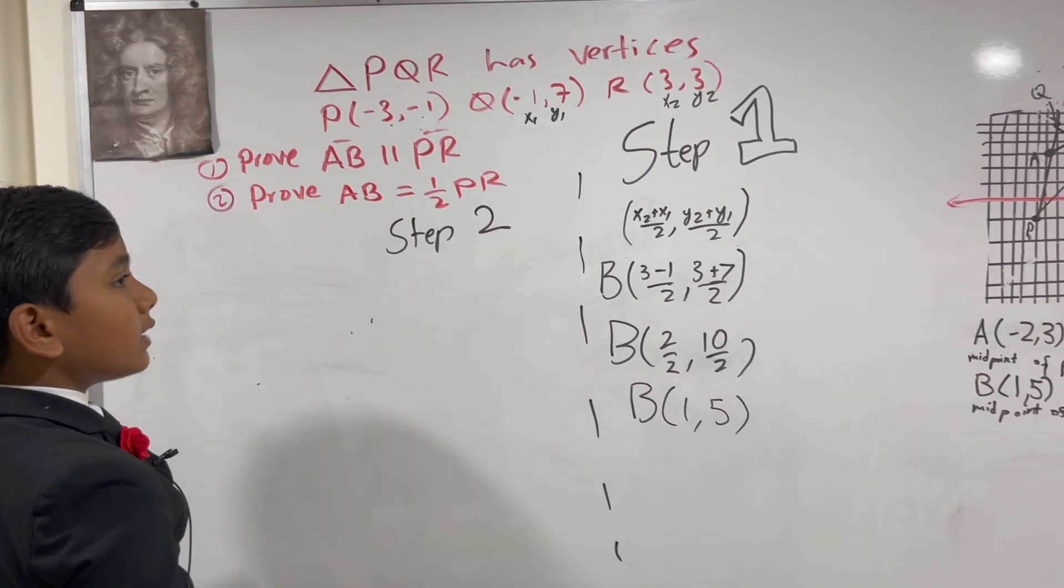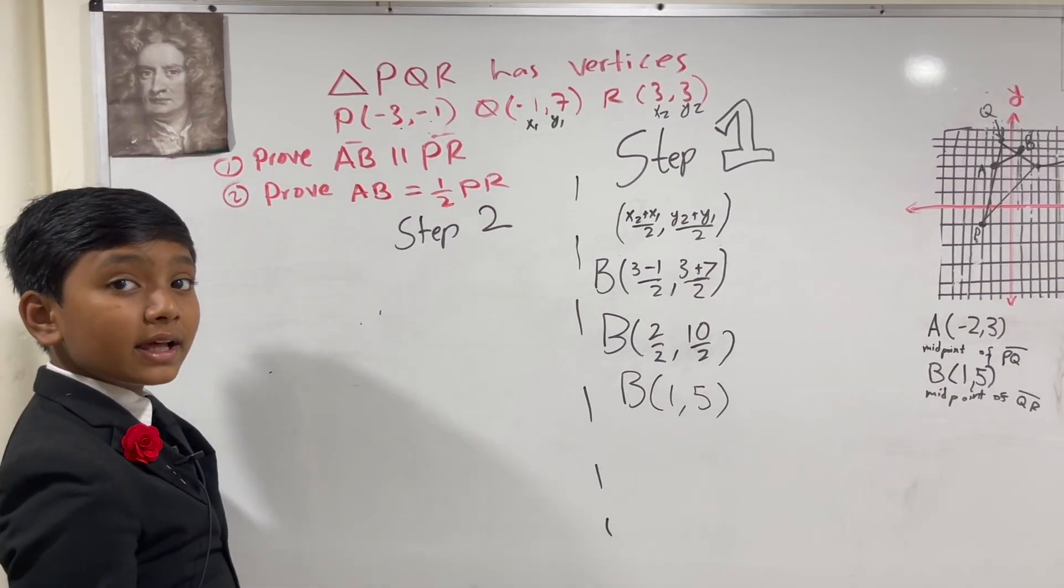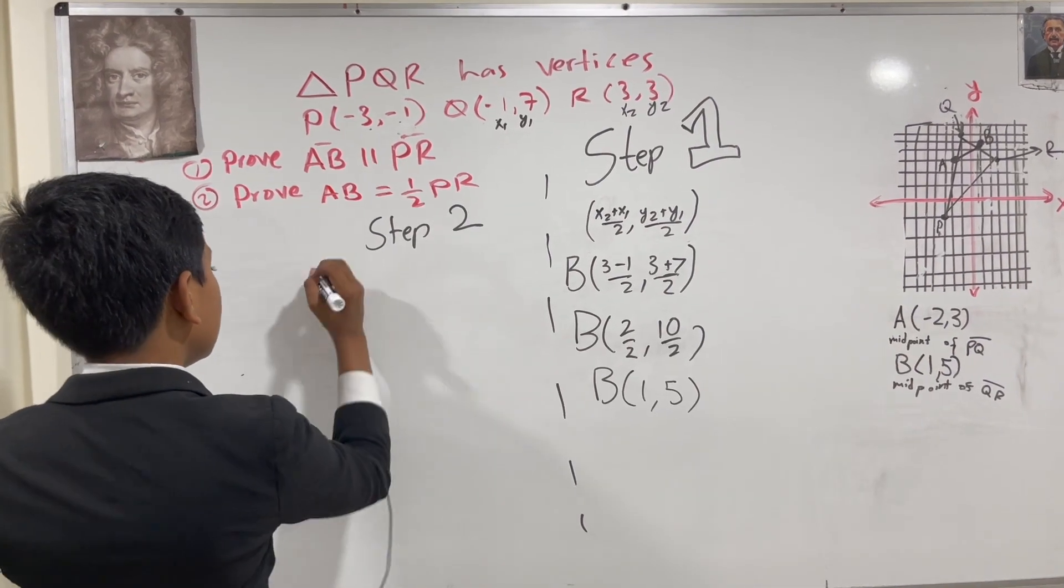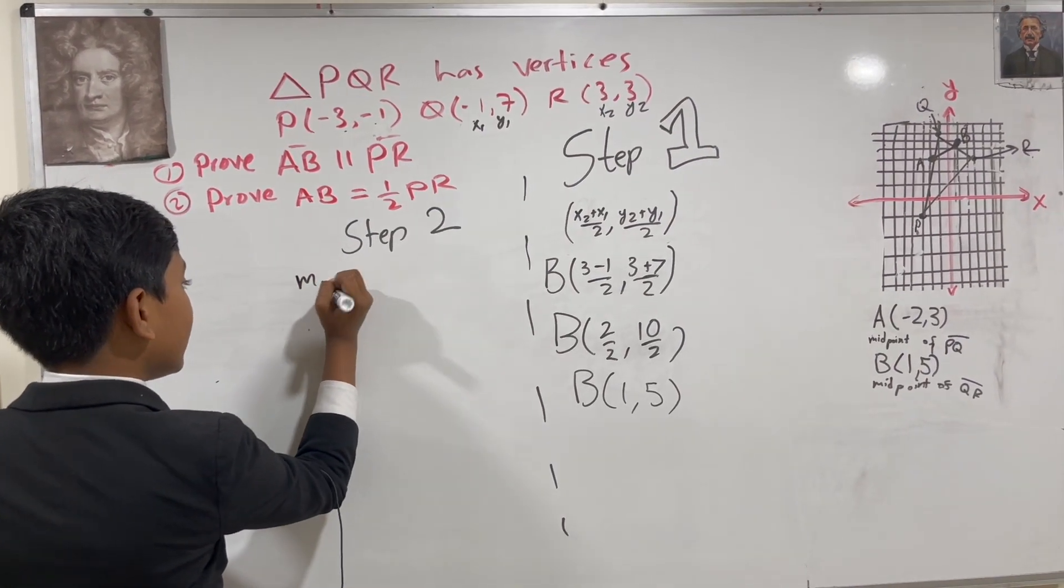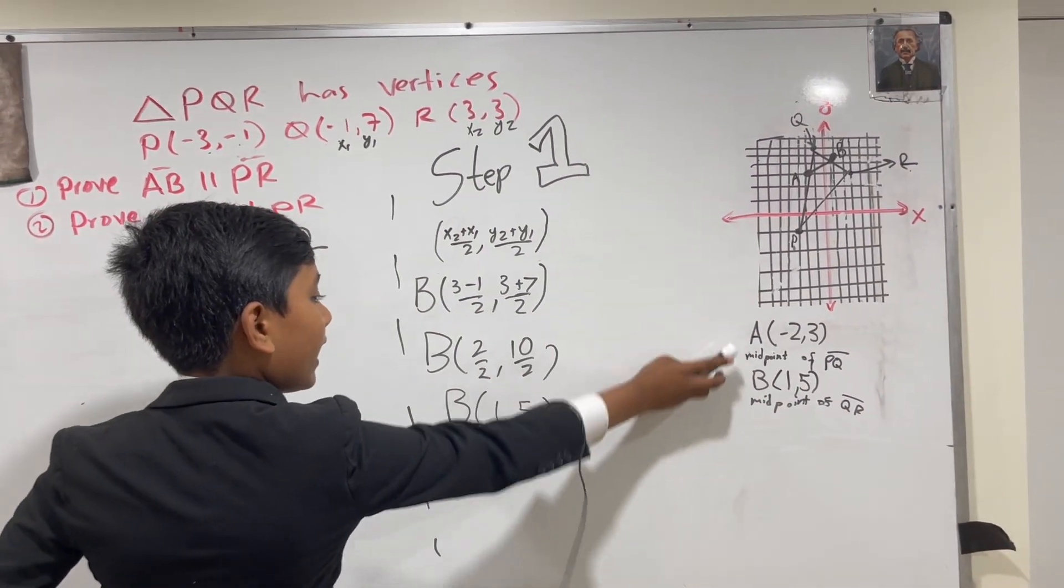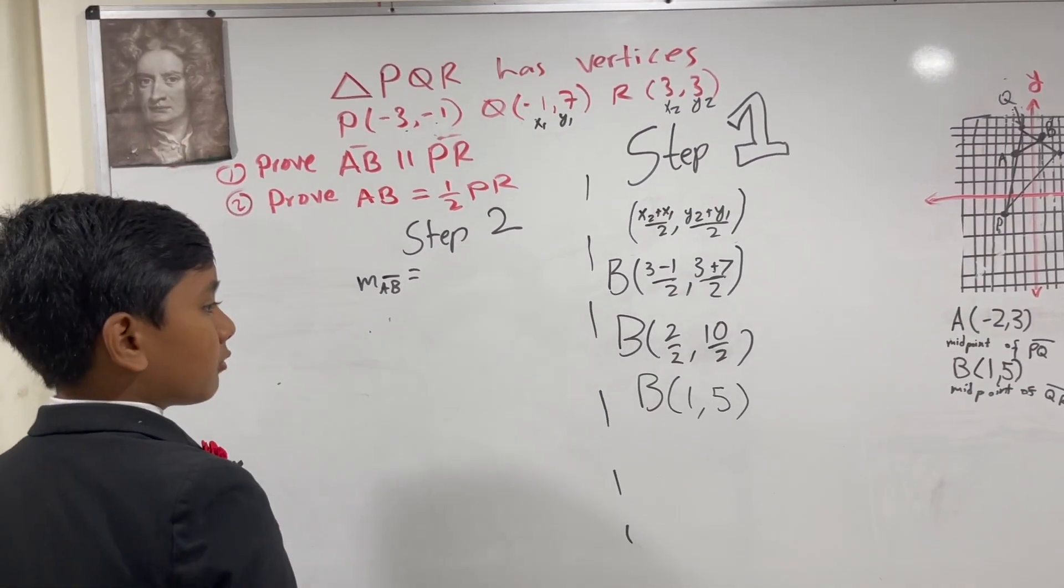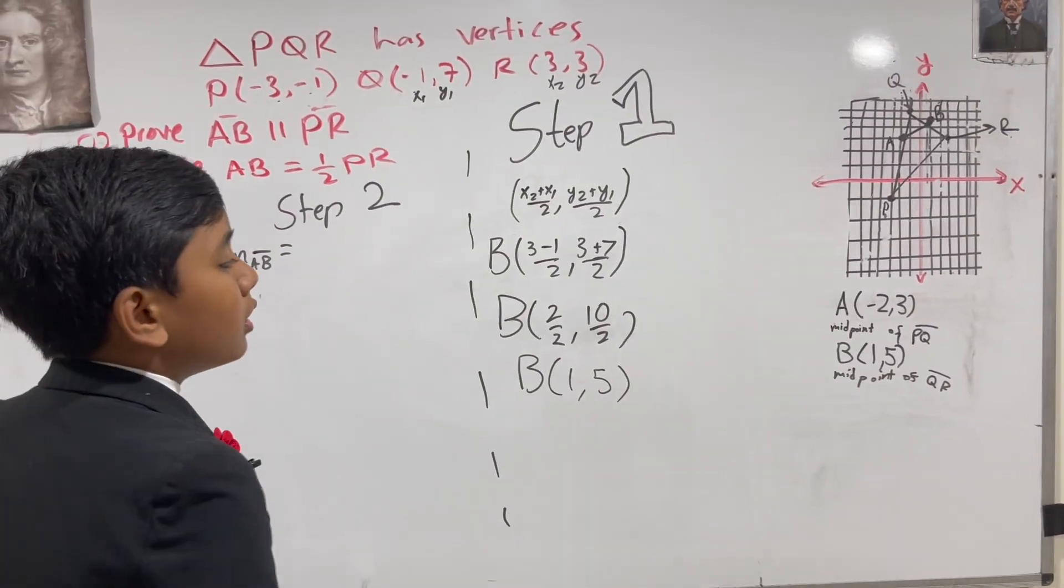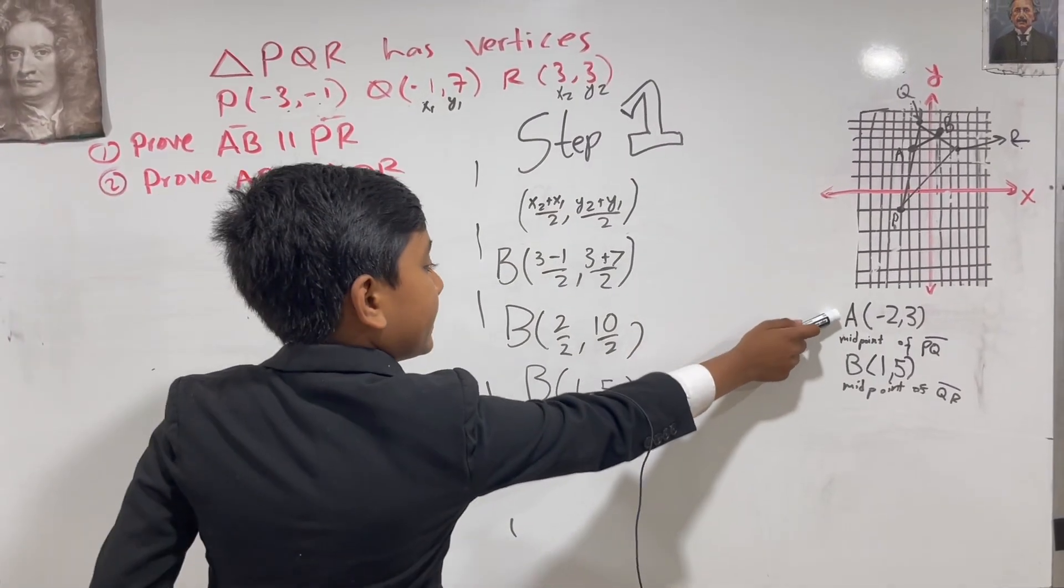So let's first find the slopes. Then, if they're equal, we know that they're parallel. The slope of AB is, well, we know the coordinates of A are negative 2 comma 3. Once again, for the same reason based on X value, we're going to term this as coordinate 1 and that is coordinate 2.